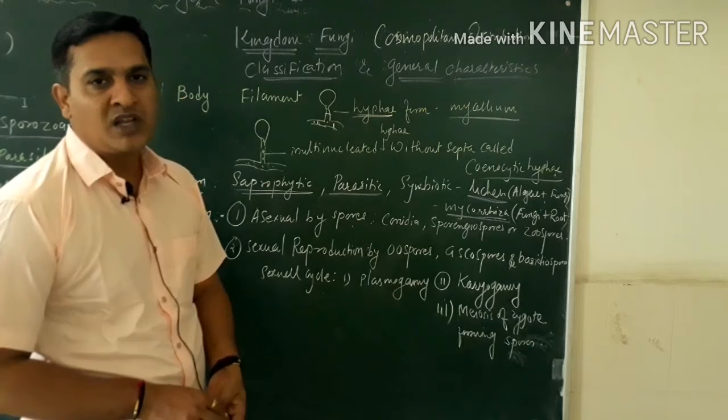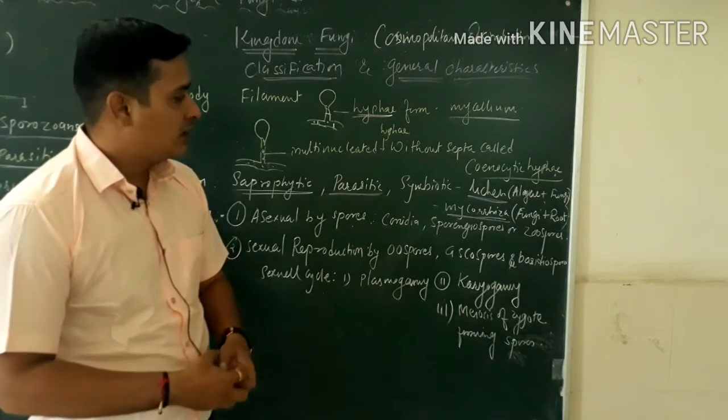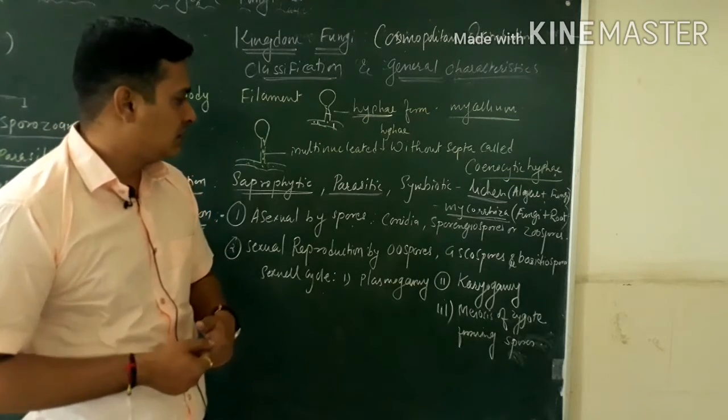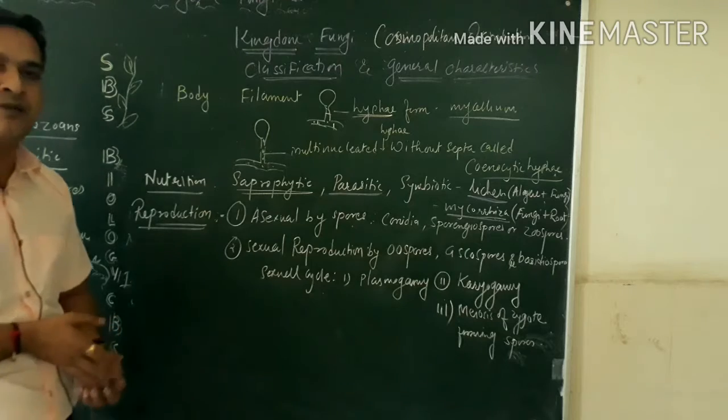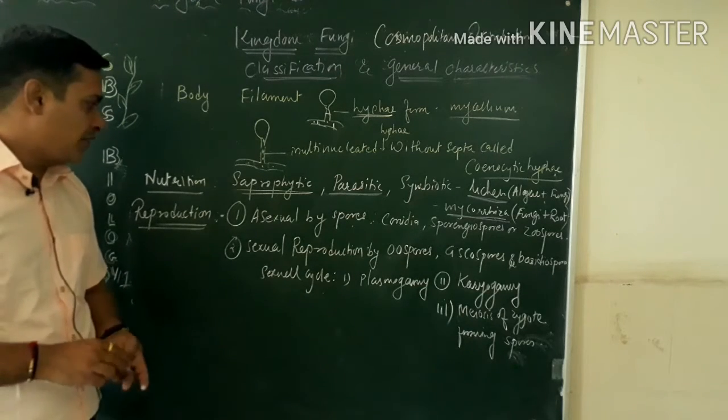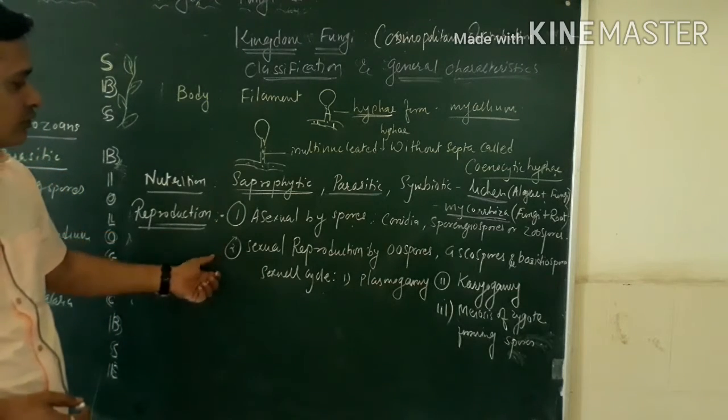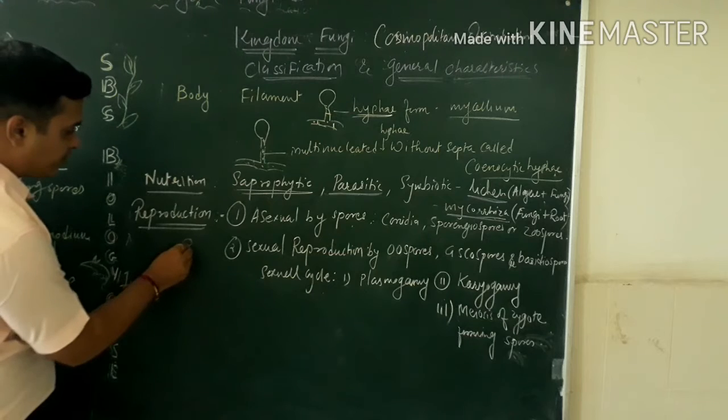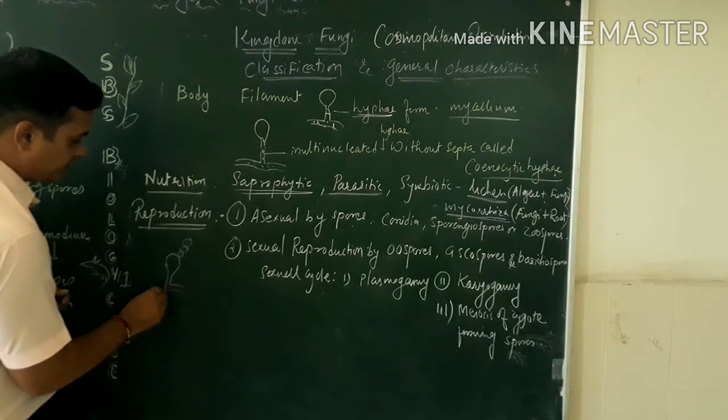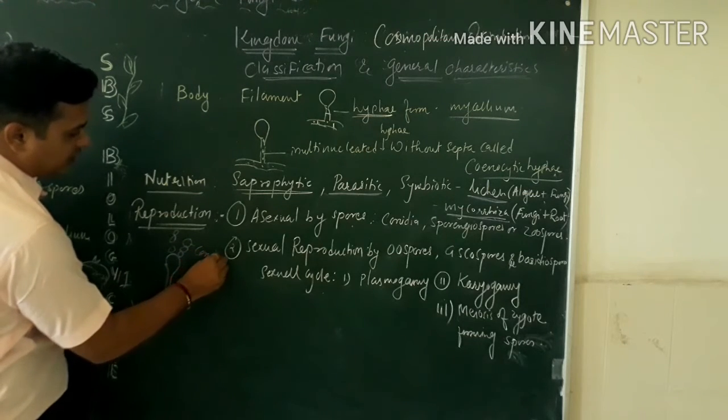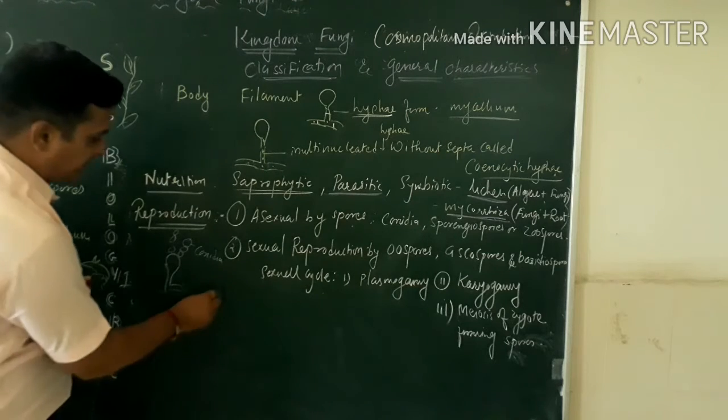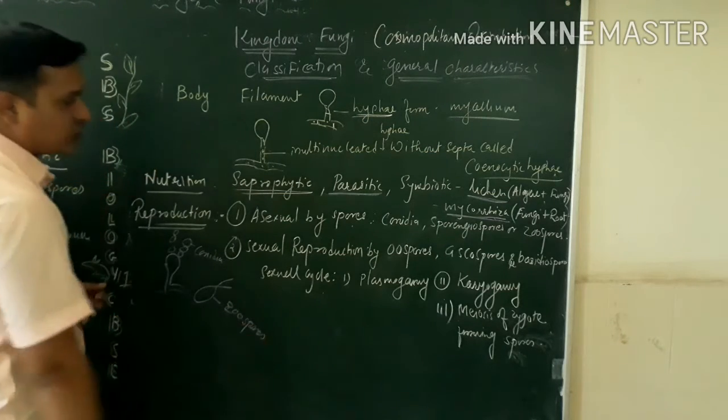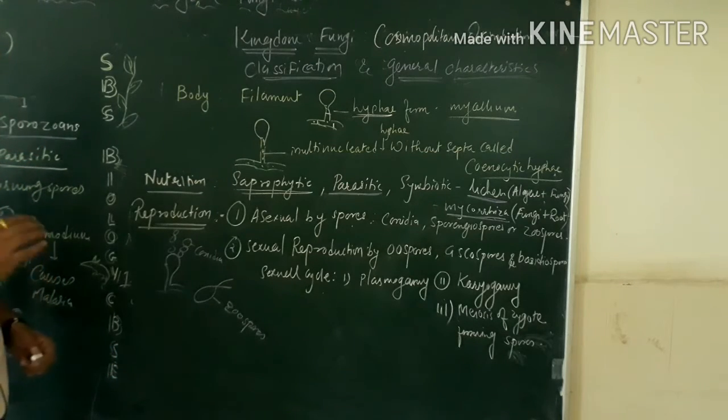While the mycorrhizae, mycorrhizae is a symbiotic association between the root and fungi. So root provides the food and fungi provides the moisture and other nutritive salts. So this way the nutrition occurs in kingdom Fungi. Now we talk about reproduction. Reproduction is occurring mostly in two ways. Asexual reproduction by conidia. They can produce spores on a sporangiophore. So forming the conidia if it is not movable. But if it is movable and has flagella, then this is called zoospores. The body is a haploid body.